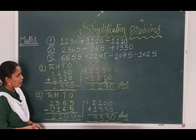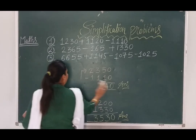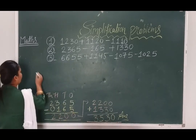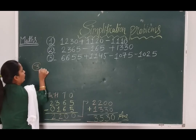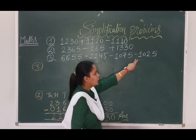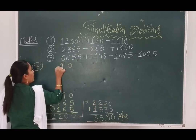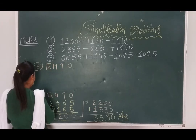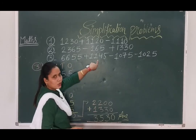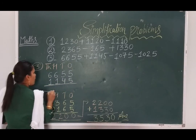Same way, we can solve another example. Now the third one — our last example. Here there are 4 signs: one addition and two subtractions. Since there is an addition sign first, we first add the two numbers. We write place values: ones, tens, hundreds, thousands. Our digit is 6655, and the second digit is 1145. Now we add these two numbers.